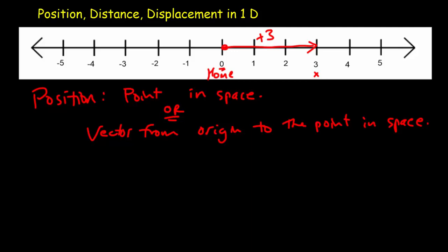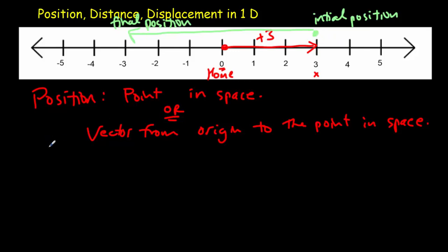If we want to talk about displacement, we have to talk about two positions in space. We'd have an initial position — let's say we were at school, three kilometers to the right of our home — and we traveled to the post office, which would be our final position. Then our displacement would simply be the vector from that initial position to that final position. In this case, the vector would be negative six: negative because the vector is to the left, six because the length is six units from plus three to minus three.